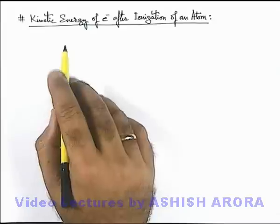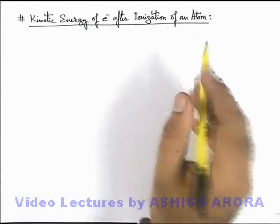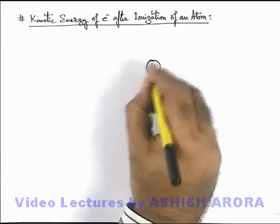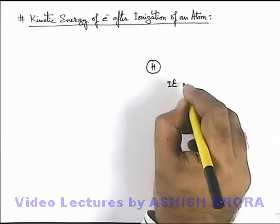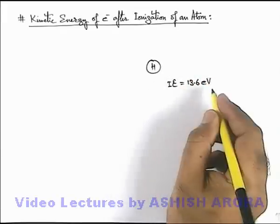Let us discuss the kinetic energy of an electron after ionization of an atom. If we talk about a hydrogen atom, we know that ionization energy of hydrogen atom is 13.6 electron volts in its ground state because